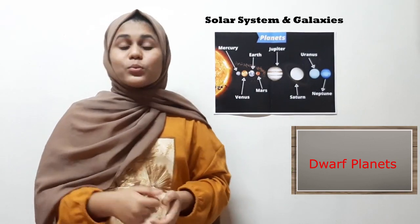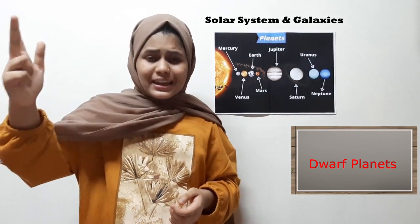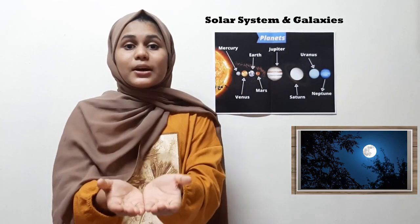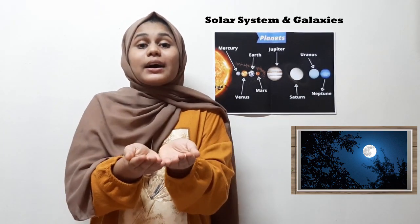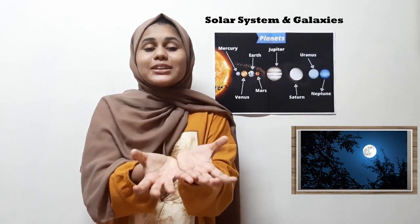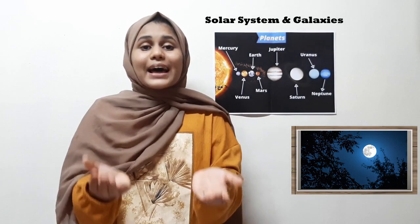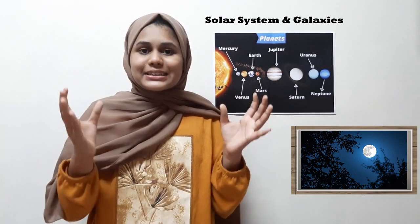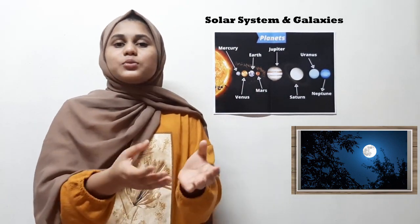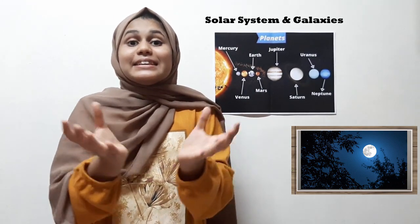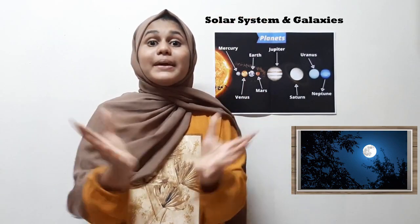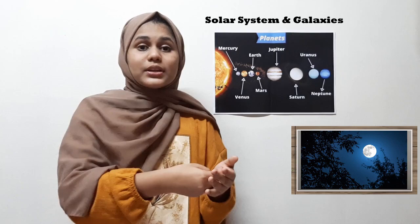Examples of dwarf planets include Ceres, Eris, and Pluto. Now, the moon is an object that revolves around the Earth, and that is what makes the moon a natural satellite. A natural satellite is a small body that orbits around a bigger body.